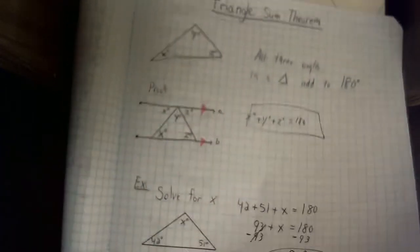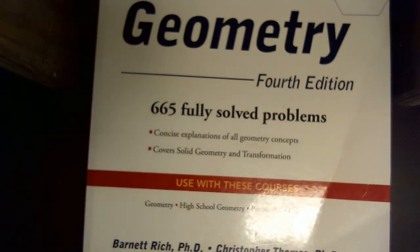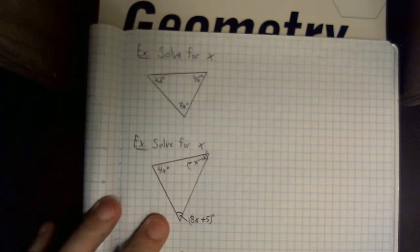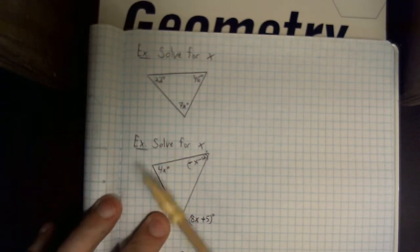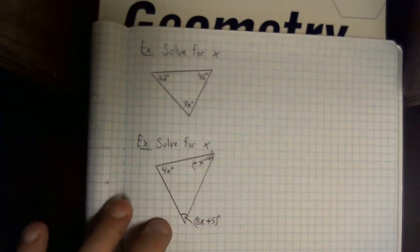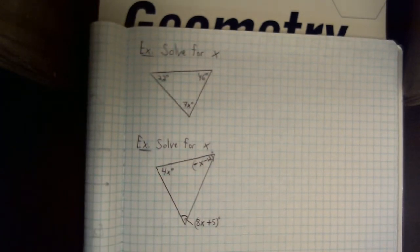I'm going to give you a new problem for you to try on your own. So, if you want to pause this, you can take a second to pause it and try it on your own. The triangle that you see here is 22 degrees, 46 degrees, and 7x degrees. So, take a second, pause the video, try it on your own, and we'll discuss the result.